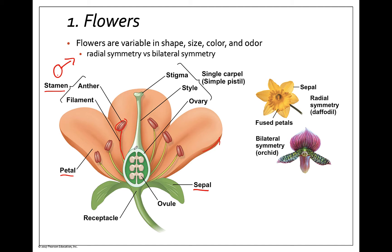Typically in the center of the flower we have the female sporophyll, which is the megasporophyll, made up of three parts. We have the stigma — this is the really sticky top portion where pollen grains are actually going to land and it grabs onto them. There's a style, again a staff to help hold it up. And then the ovary, which can have one ovule or, in this case, six ovules. When you put all of these together it's called a carpel, sometimes also called a pistil. This is the female megasporophyll.